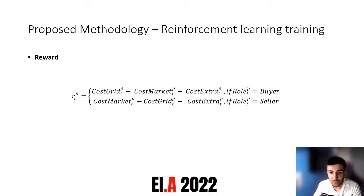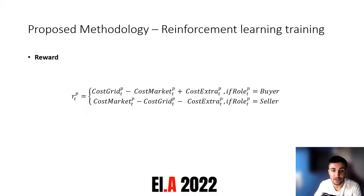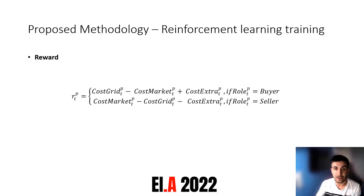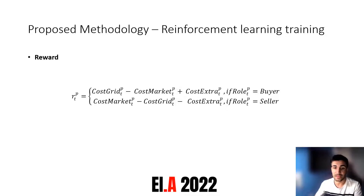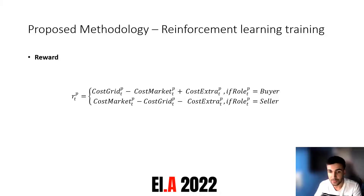To calculate the reward, we separate the calculation for buyers and sellers, but there are three components. The cost grid is the price the agent would pay if not participating in the energy market — buying or selling only from the retailer. The cost market is the cost or profit from participating in the peer-to-peer market. The extra cost is the aftermarket phase: if agents can't buy or sell all the energy they need, they go to the retailer to buy or sell the remaining energy.